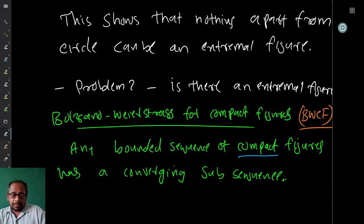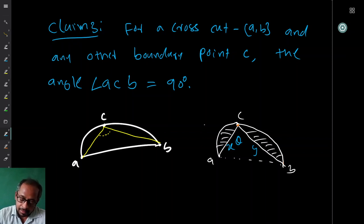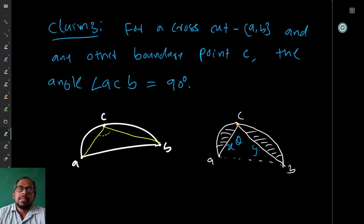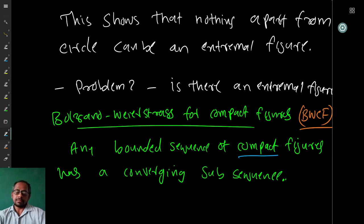These three claims together show that nothing apart from a circle can be an extremal figure, because the only curve where every boundary point subtends a 90° angle on a diameter (the cross cut) is a semicircle — and putting two equal halves together gives a circle.